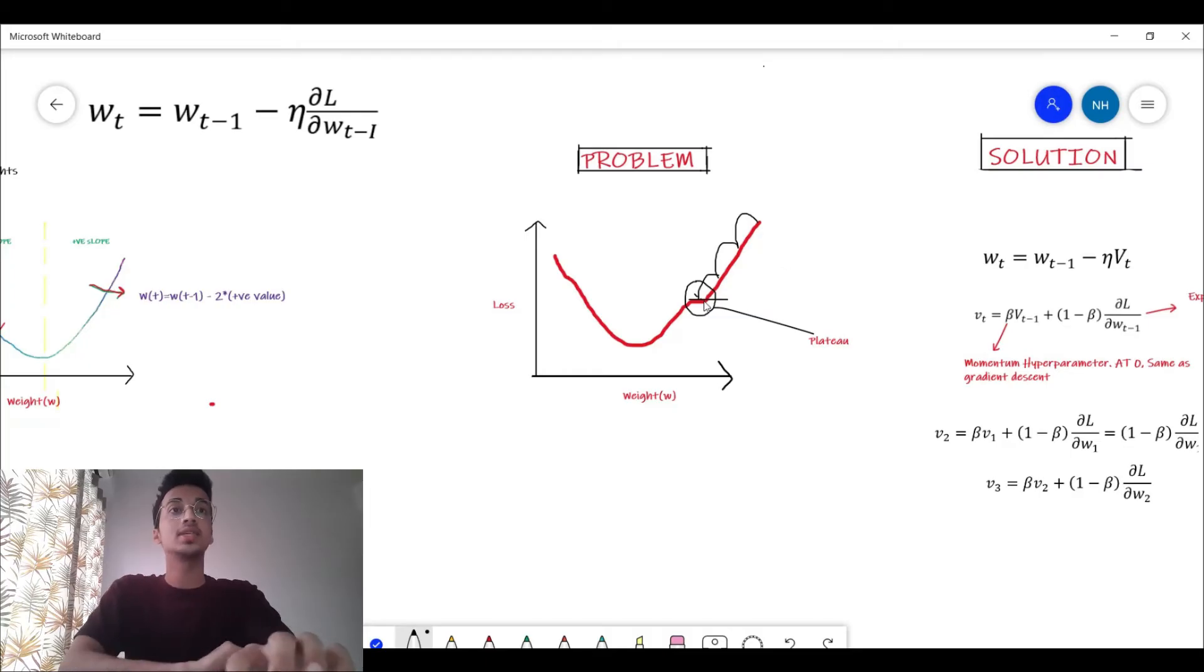What you would want is for the algorithm to understand that hey, since I'm descending so fast over here, since the slope was so high just in the previous time steps, it is not possible that I could have reached the minima so soon. So let's just keep going. That is one way to understand why momentum could play a role. Basically, since you're descending so fast you would want to keep going.